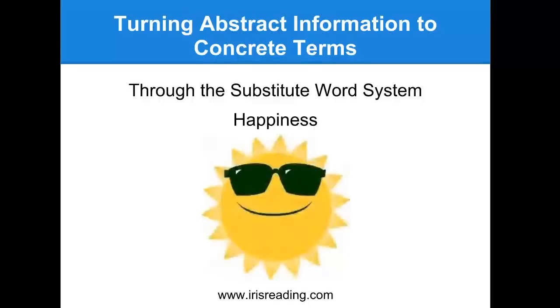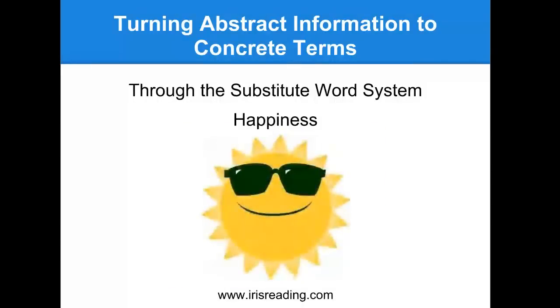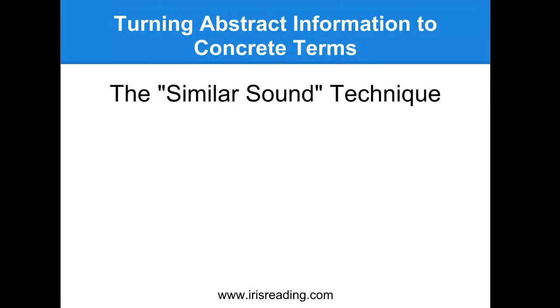We can think about how the substitute word system breaks down abstract words. The liberty bell is easy; justice and judge are easy. But it gets a little harder — this is where the similar sound technique comes in. This is a way of substituting a concrete word for an abstract word, and the similar sound technique is actually part of the substitute word system. It simply requires you to look for similar sounds in those abstract words that are unfamiliar to you. Let me give you an example.